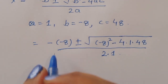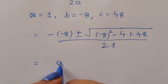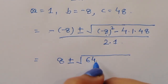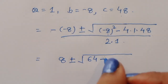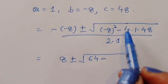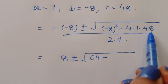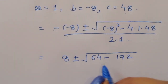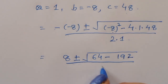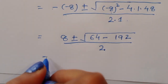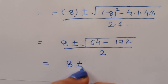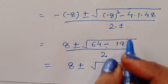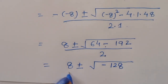Simplifying: this becomes 8 plus or minus square root of (64 minus 192) divided by 2. Now 4 times 48 equals 192, so the discriminant is 64 minus 192 equals minus 128. So we have 8 plus or minus square root of (minus 128) divided by 2.